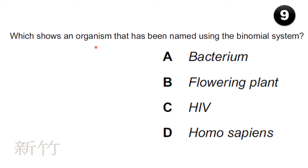Which shows an organism that has been named using the binomial system? Options: A) bacterium, B) flowering plant, C) HIV, D) Homo sapiens. Bacterium, flowering plant, and HIV are common names. Homo sapiens is the proper binomial name, so the answer is D: Homo sapiens.